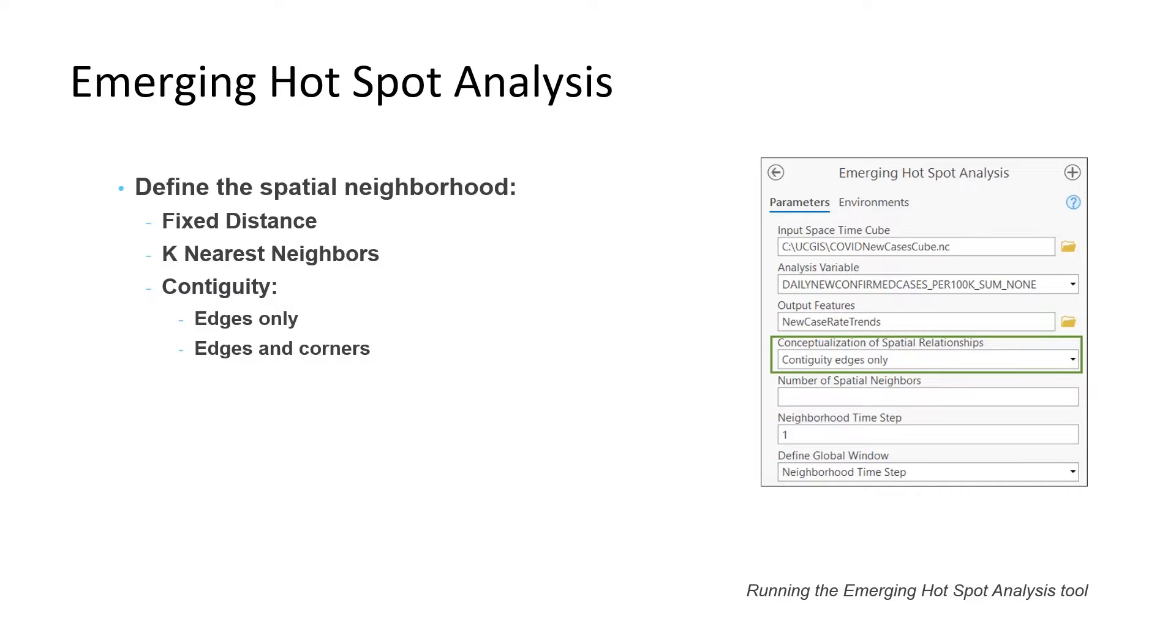Next, you'll choose a conceptualization of spatial relationships. What the heck is that? That's really just how you define a neighborhood, and it should be based on your best guess about how the features, counties in this case, how the features interact with each other. Since COVID-19 spreads person to person, the ideal conceptualization of spatial relationships would be something reflecting the amount of spatial interaction that occurs among counties. Our options here are fixed distance, k-nearest neighbors, and contiguity. We'll select contiguity edges only, guessing that spatial interaction might be highest between counties that share a border.